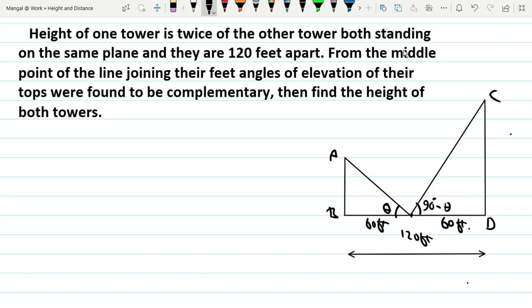Let AB equal x meters and CD equal 2x meters. AB is x and CD is 2x. From the meet point, we can form two triangles.